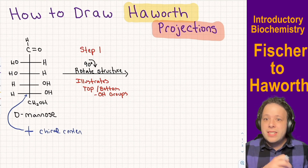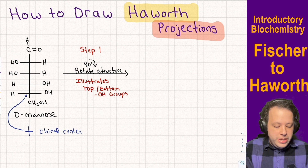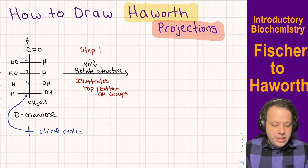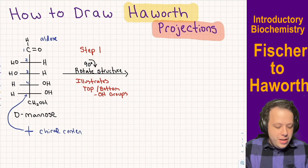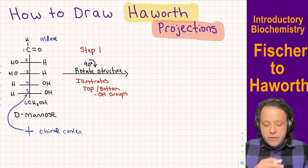The whole idea is to transform it into a three-dimensional structure in a ring projection, so we have to cyclize this. The first step is that you need to number your carbon chain. We always give the highest priority functional group — which is our aldehyde, or aldose in this case — the number one, and then number all of our carbons.